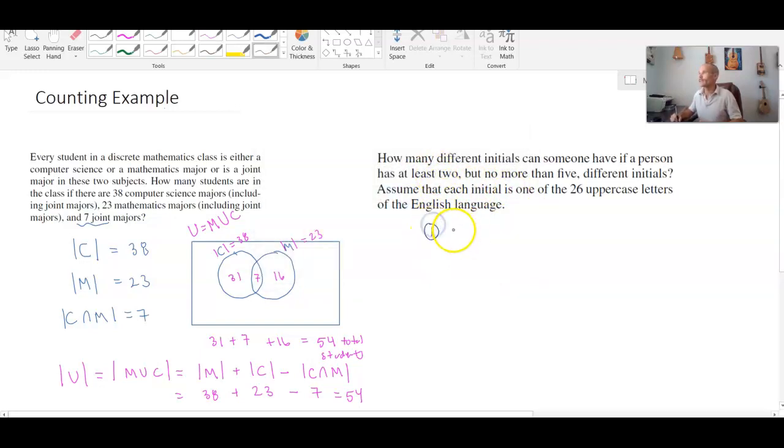The first case is a person has two initials. To have two initials, each initial is going to be one of the 26 uppercase letters in the English alphabet. The number of ways you could do that is: there are 26 possibilities for that first initial, each of those 26 is going to be paired with one of 26 other possibilities, so this is going to be 26 squared.